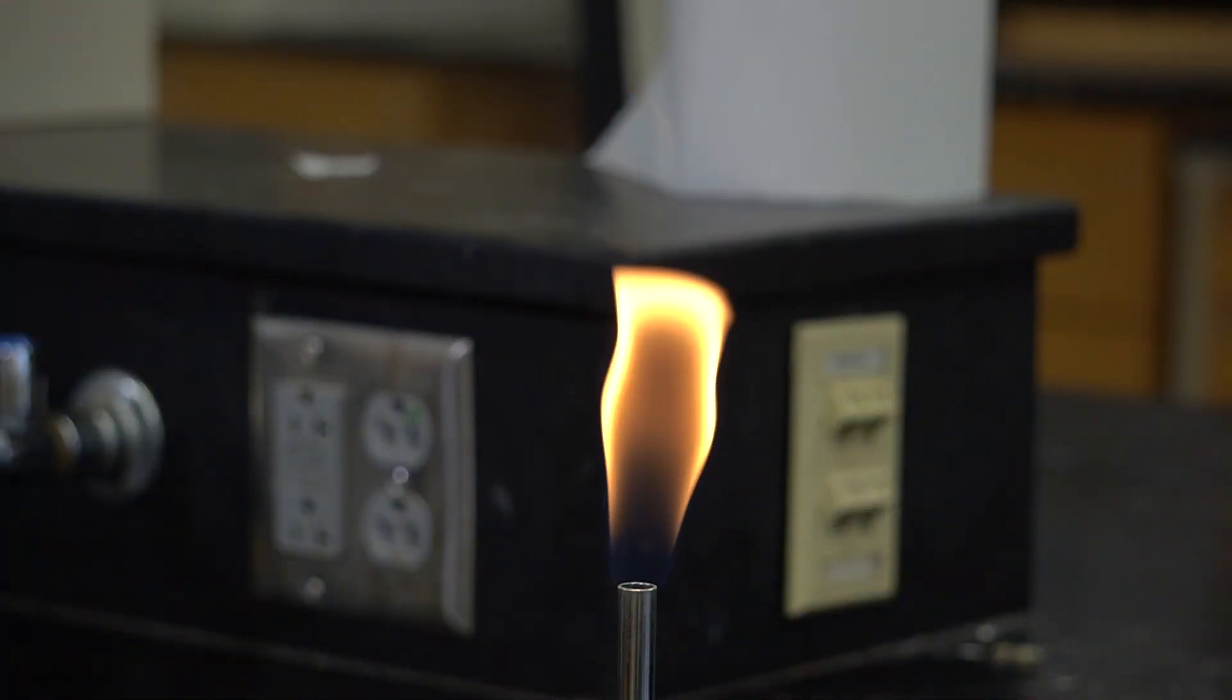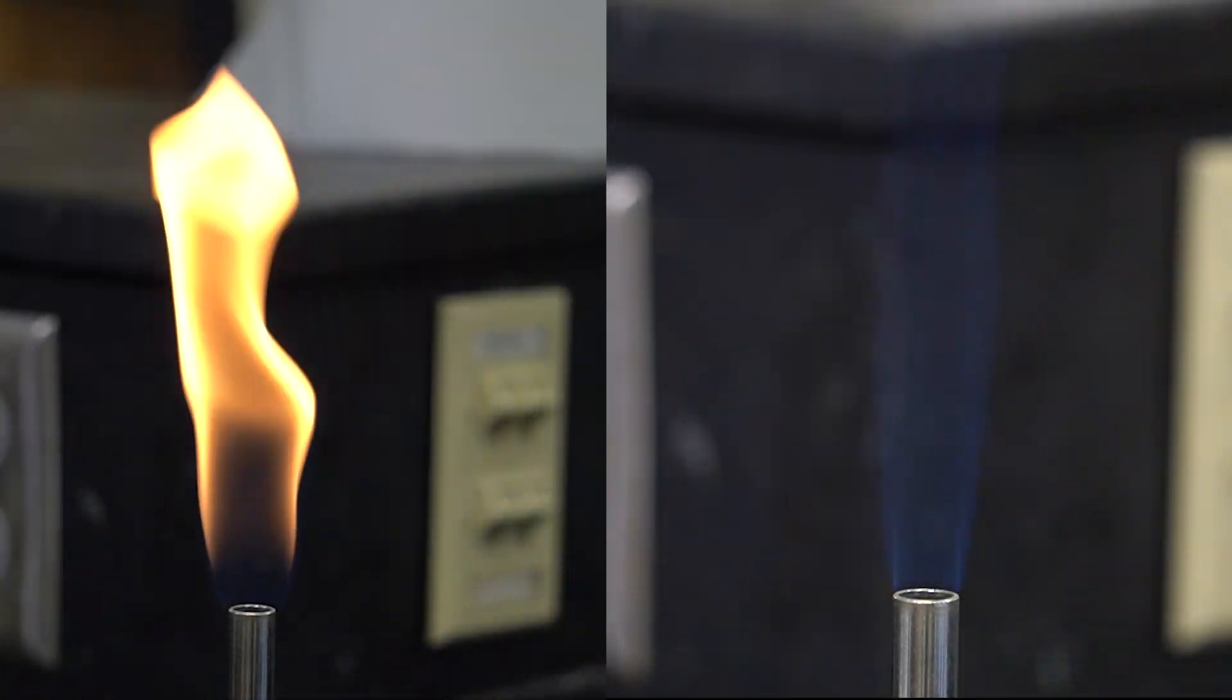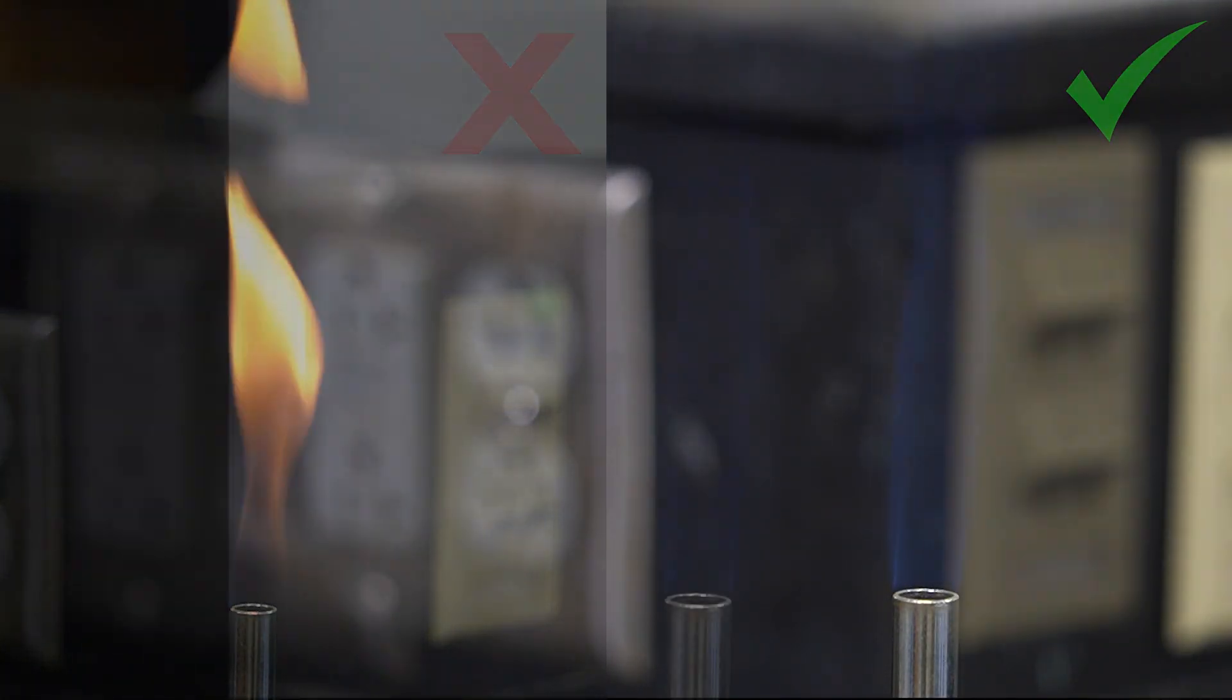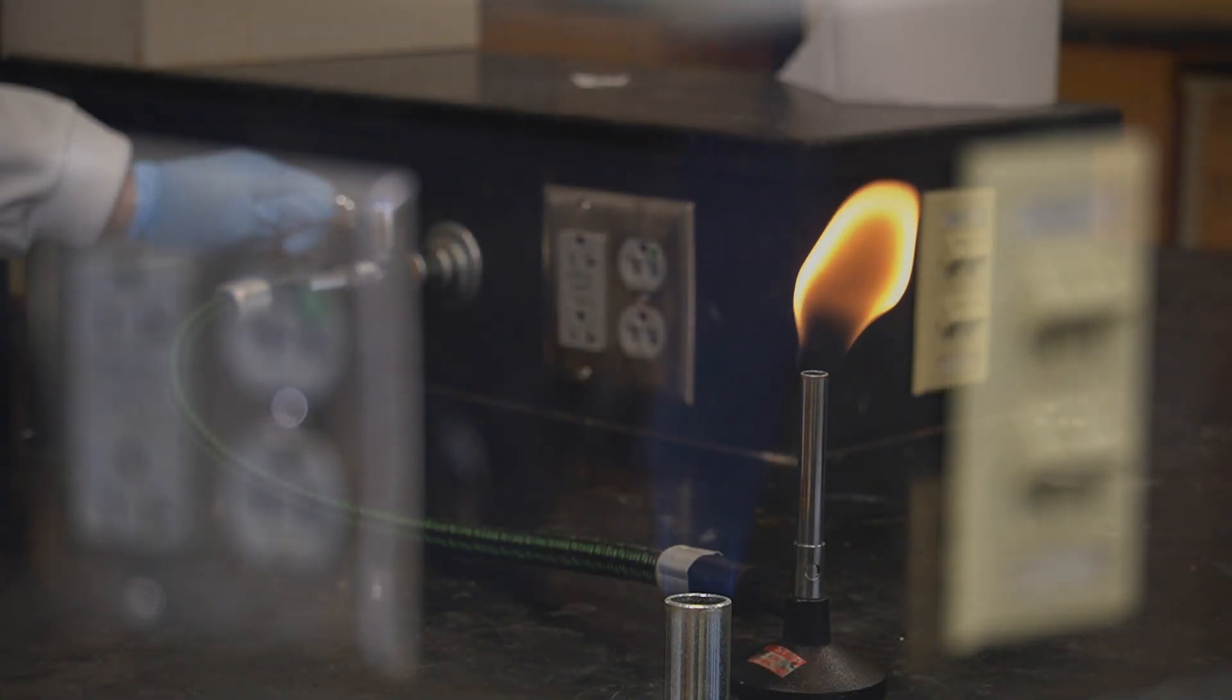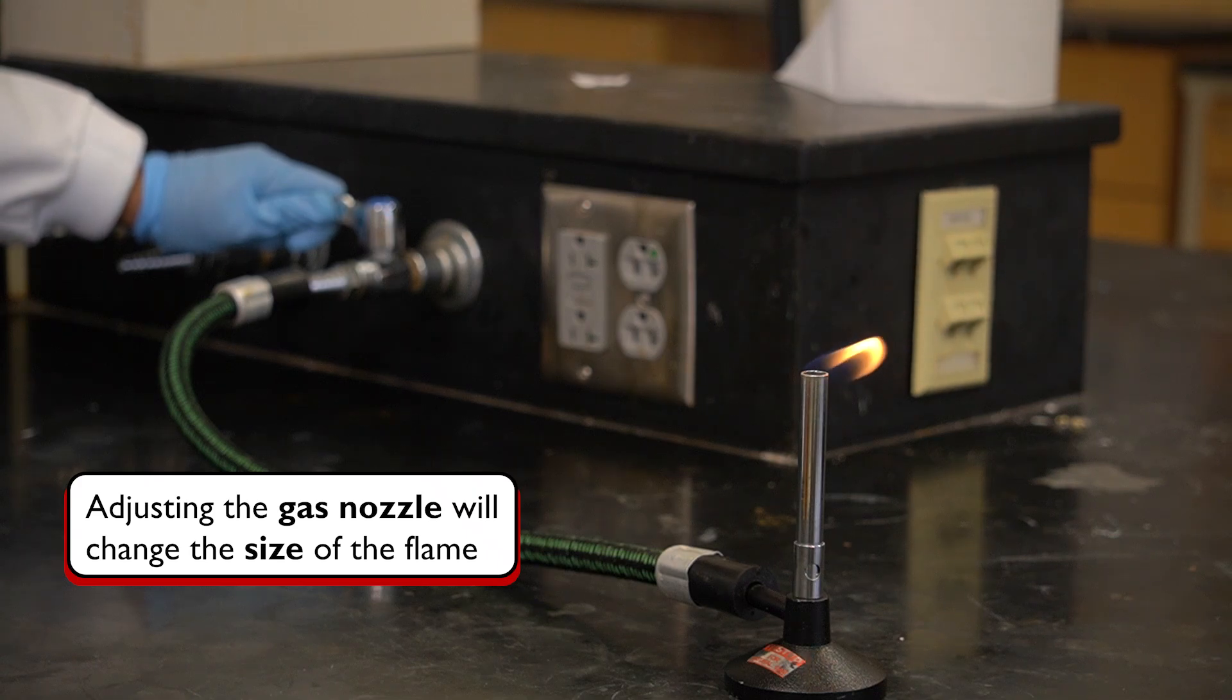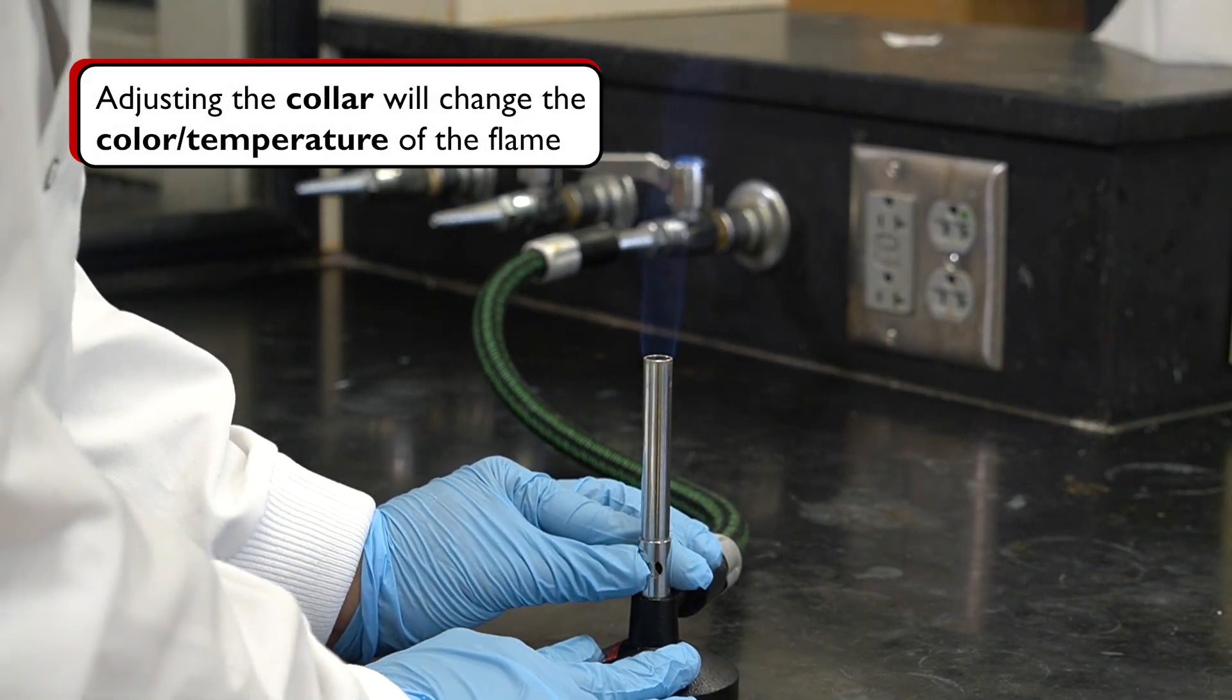Once the Bunsen burner is lit, we will likely see a flickering yellow flame. However, we usually want to obtain a tight blue flame, which indicates a stronger combustion reaction and a higher temperature flame. To adjust the flame, we turn the gas nozzle to control the supply of the natural gas or adjust the air intake by twisting the collar of the burner.